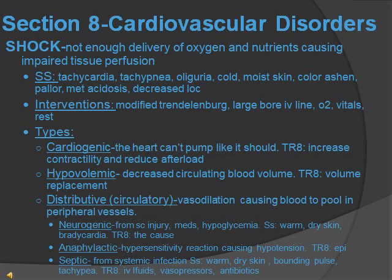There are three types of shock. Cardiogenic is when the heart can't pump adequately — treatment focuses on increasing contractility and reducing afterload. Hypovolemic is when there's not enough circulating blood volume — treatment is volume replacement. Distributive shock, also called circulatory shock, involves vasodilation causing blood to pool in peripheral vessels. This includes neurogenic shock — usually from spinal cord injury, medication, or hypoglycemia. Unlike other types, distributive shock presents with warm, dry skin, and bradycardia rather than cold, moist skin and tachycardia. Treatment is to address the cause.